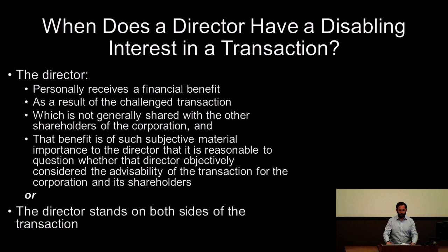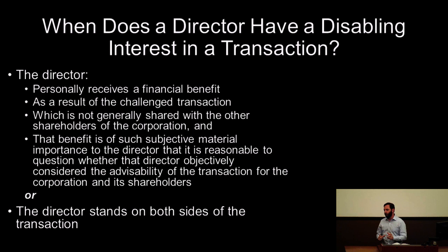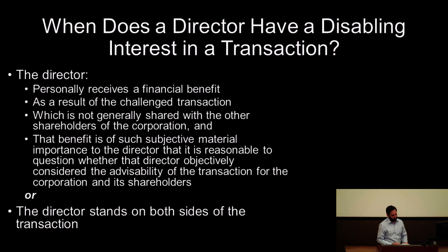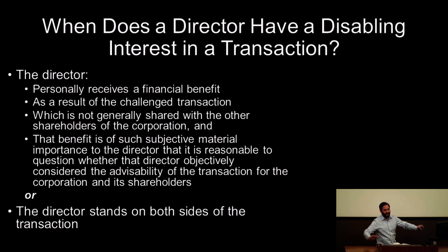When does a director have a disabling interest in a transaction? We'll distinguish interest — DCIT — versus lacking independence. There are two ways a director has a disabling interest: first, the director personally receives a substantial financial benefit, and that benefit has to be a result of the transaction in question, not shared, and of such subjective material importance that it is reasonable to question whether it would jeopardize their objectivity; or second, the director stands on both sides of the transaction. If the director is on both sides, they have a disabling interest. So either receiving a material award that's not shared, or standing on both sides.